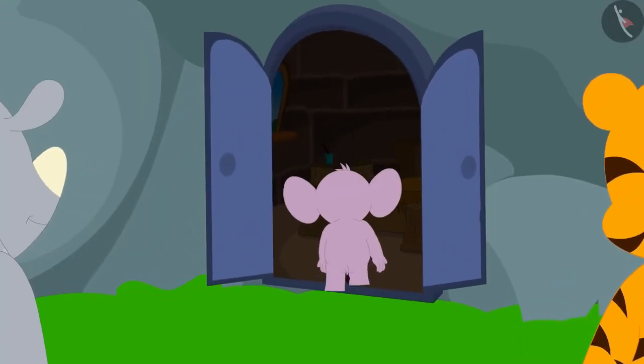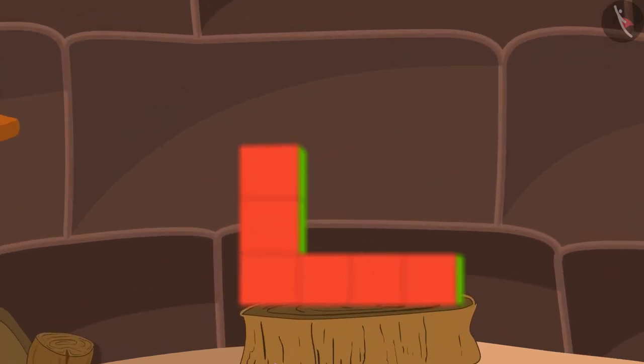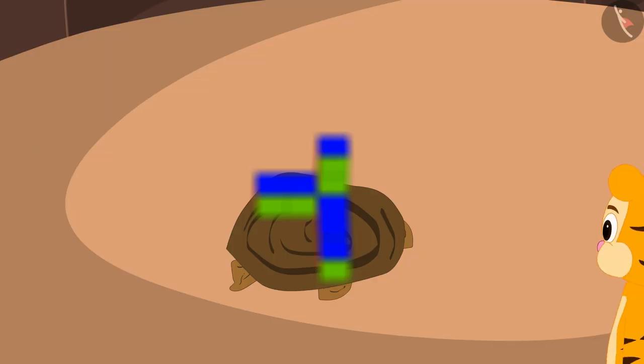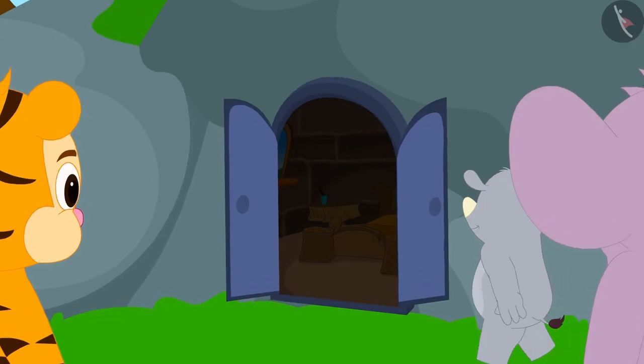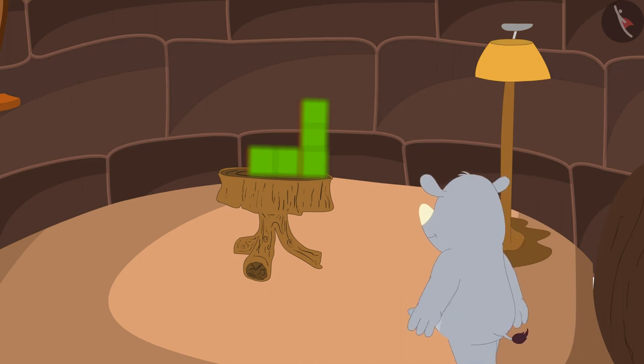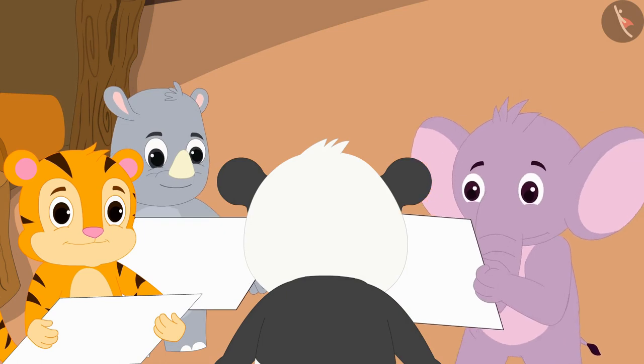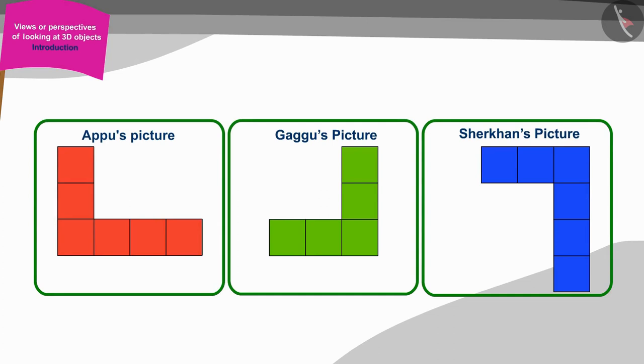First, Appu saw the shape made by Golu and went and drew his picture. Then, Shere Khan also went and saw the shape made by Golu and made his picture. And finally, Gaggu went and saw the shape made by Golu and made his picture. All three were shocked when they showed their pictures to Golu. The pictures made by the three of them were completely different.